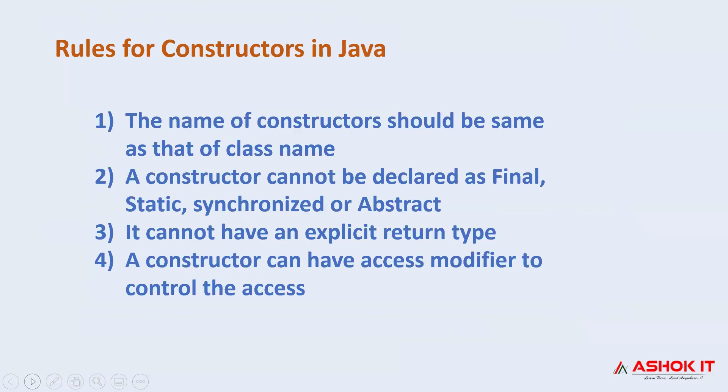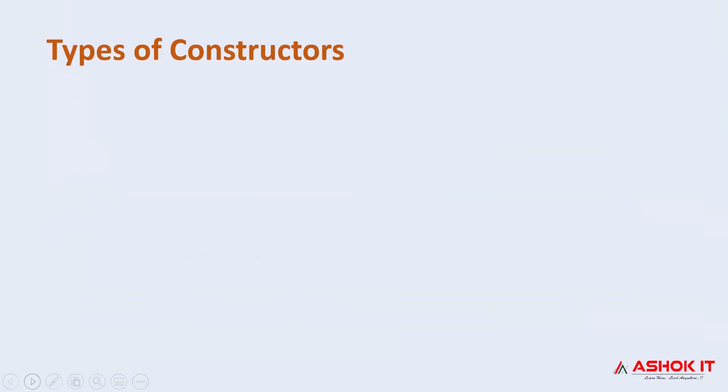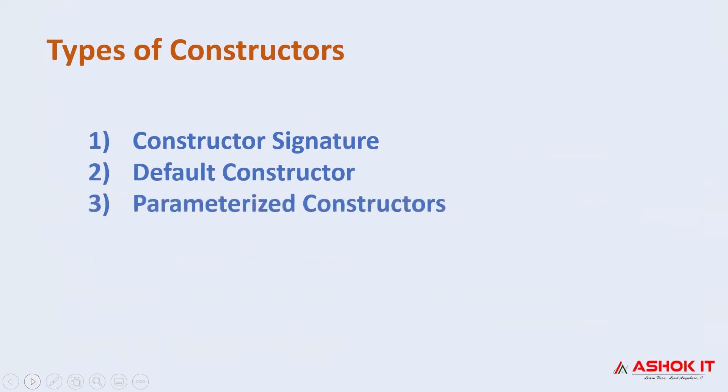Let's move ahead to types of constructors in Java. Basically, there are four types of constructors: constructor signature, default constructor, parameterized constructor, and no-argument constructor. We will first understand all three types: default, parameterized, and no-argument. First, let's understand the default constructor.